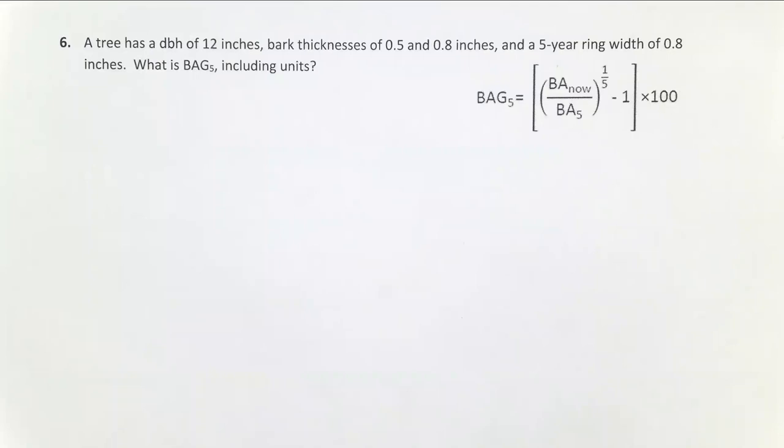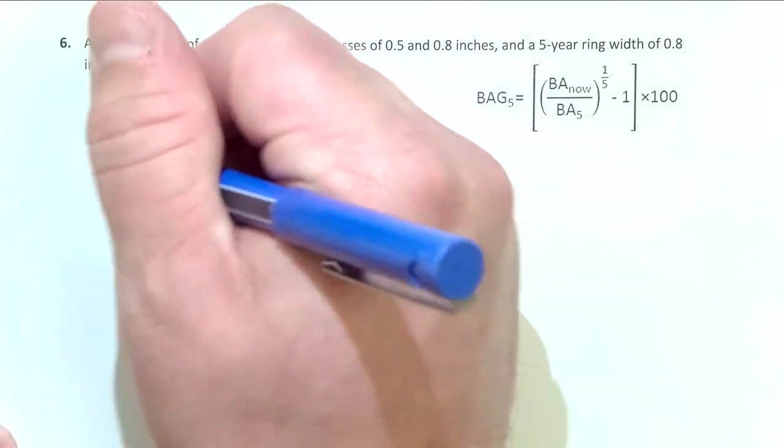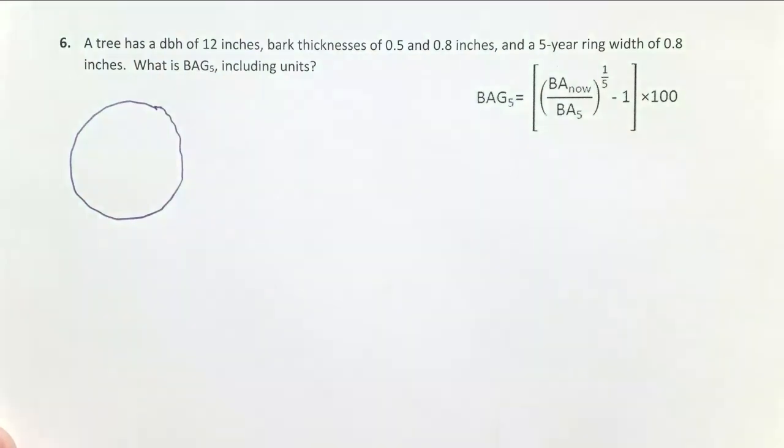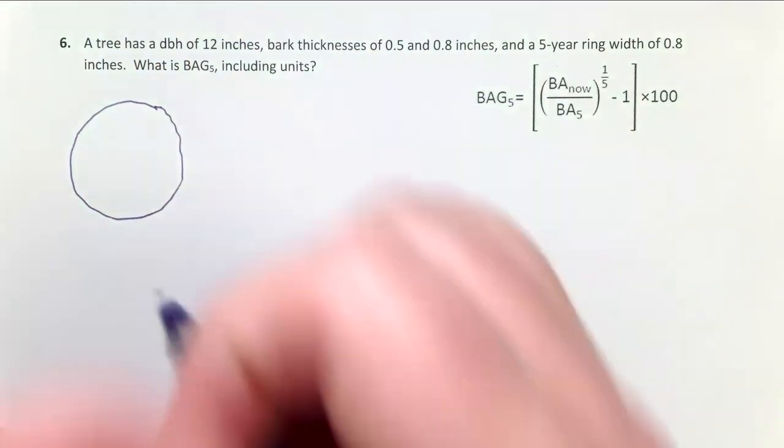In order to calculate them, what we do is go up to the tree, and I'm going to draw a cross-section of the stem at DBH. So there's our tree, and you can measure DBH.